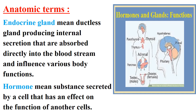The term 'tropho' means nourishment. As for anatomic terms, an endocrine gland is a ductless gland producing internal secretions that are absorbed directly into the bloodstream and influence various body functions.